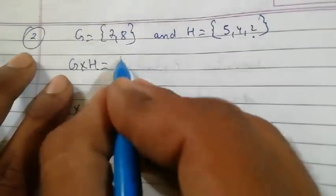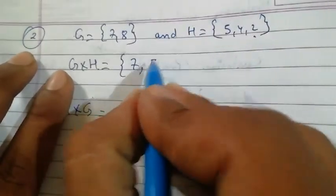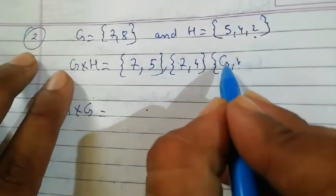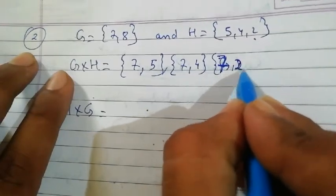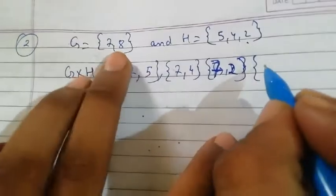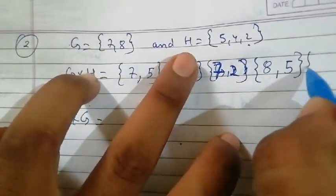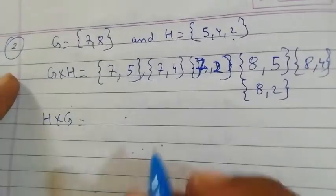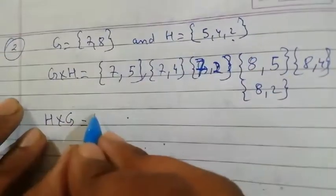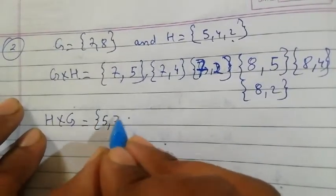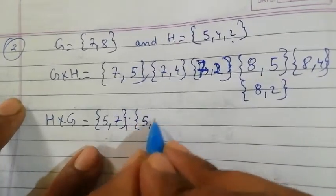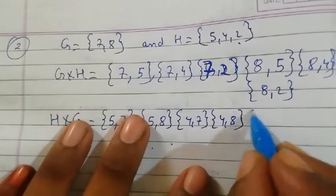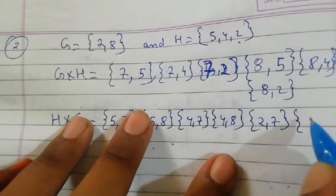For G×H: we write the element of G first, then one element of H — so the pairs are (7,5), (7,4), (7,2), (8,5), (8,4), (8,2). That is the product G×H. For H×G: we write the element of H first — (5,7), (5,8), (4,7), (4,8), (2,7), (2,8). You can count — 6 elements in total.